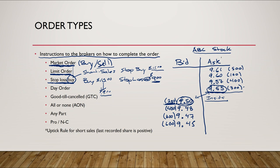The remaining order types are instructions about how long the order stays open and whether it should be filled in full or partially. A day order means the order — whether a market, limit, or stop order — is only good for the day it's placed. If the order doesn't get filled by the end of the trading day, it gets cancelled. If you want to continue the transaction the next day, you have to reinitiate another order.